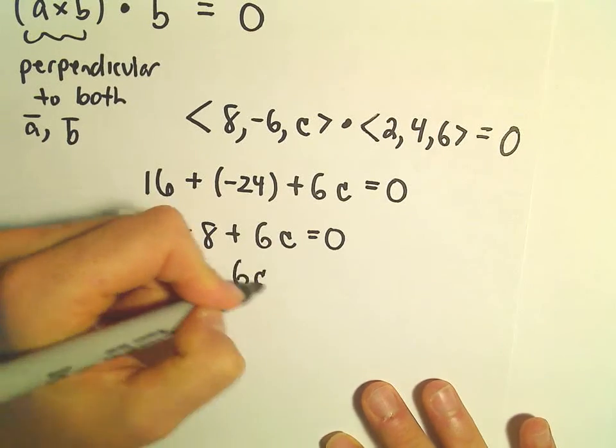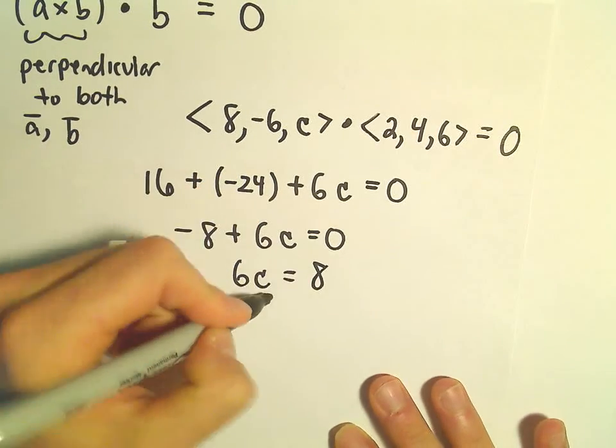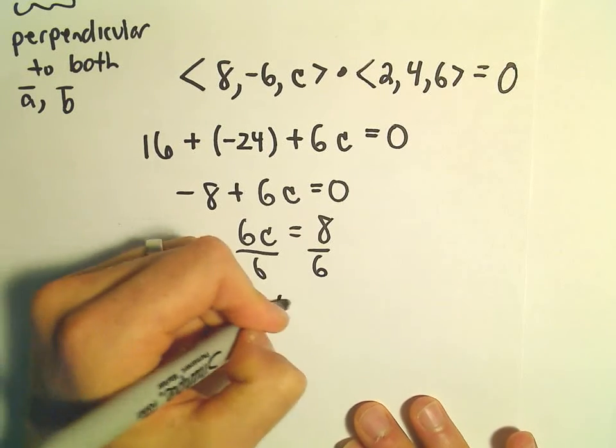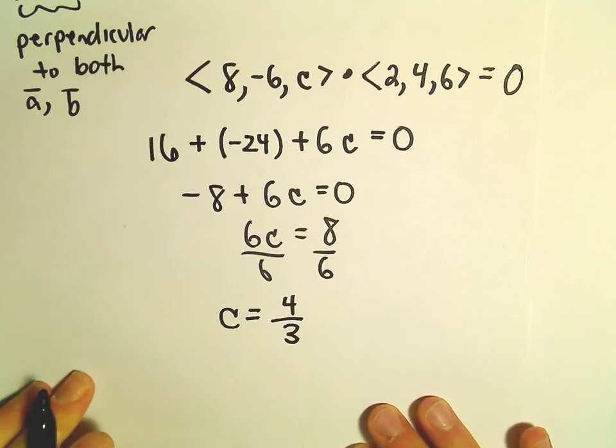We can add the 8 over. We can divide both sides by 6, and that tells us that the value of c would have to equal 4 thirds.